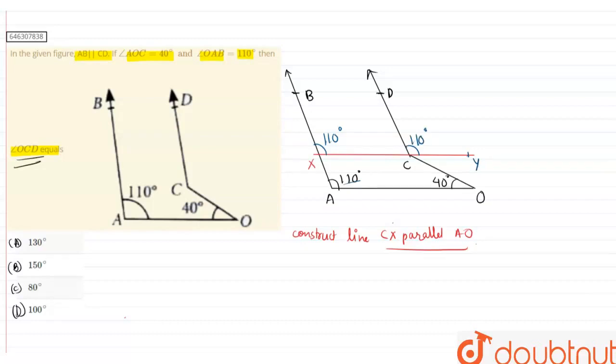And one more thing, if you have observed from this angle 40, since these lines are parallel, this angle 40 will be equal to this angle OCY. This is the alternate angle. So this will be equal.